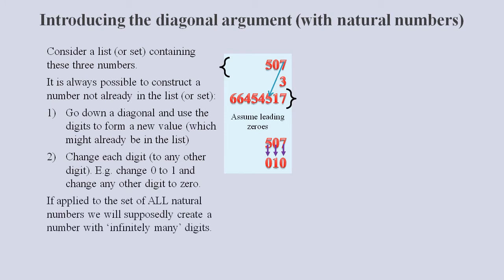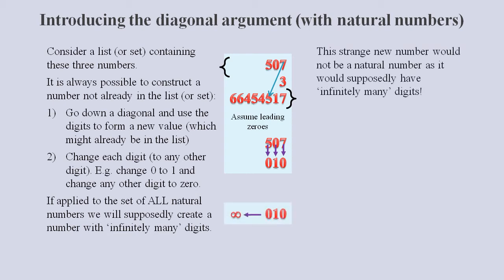But what if we could have an infinite list containing all the natural numbers? Would we be able to construct a number that is not already in the set of all natural numbers? Well, supposedly we could apply the diagonal argument. But our result would be a different type of number. It wouldn't be a natural number because it would have infinitely many digits.